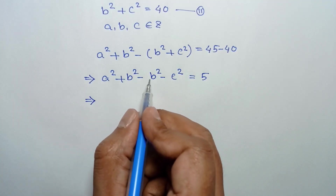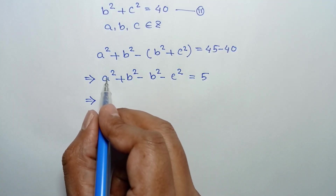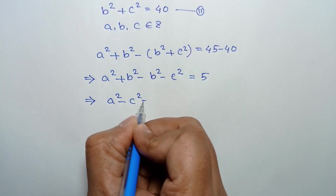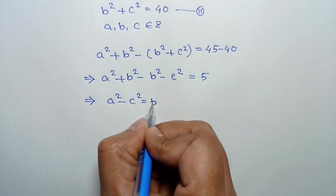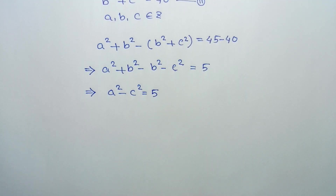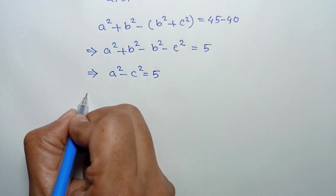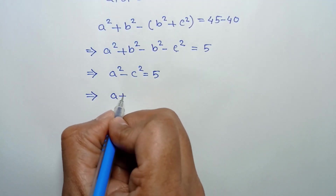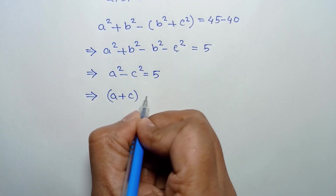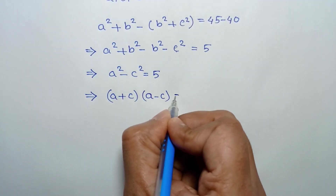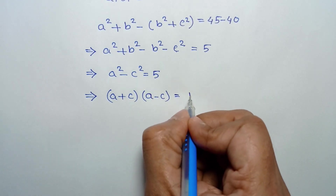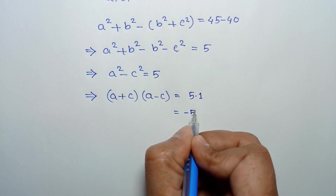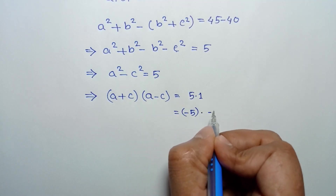The b squared terms cancel out, so it remains a squared minus c squared. And a squared minus c squared can be written as a plus c times a minus c, which is equal to 5. This can be written as 5 times 1, or negative 5 times negative 1.